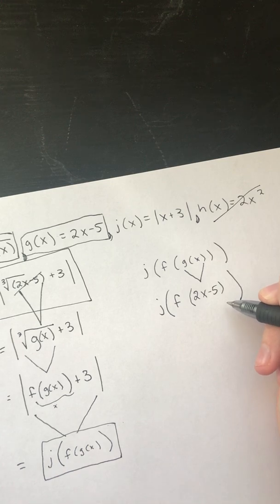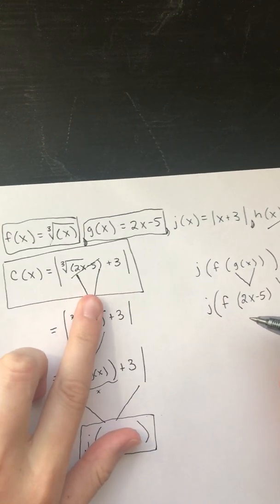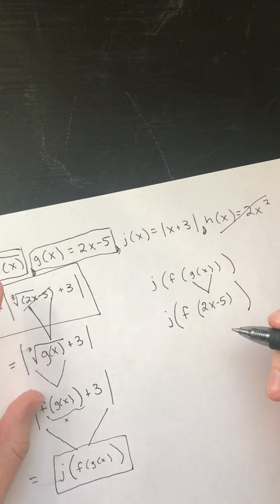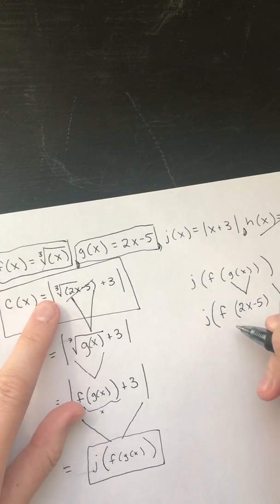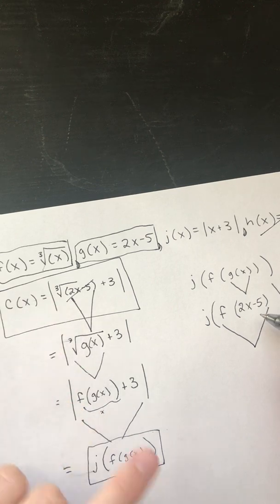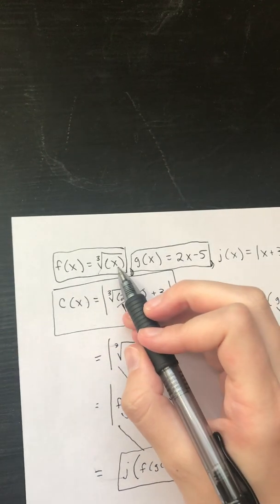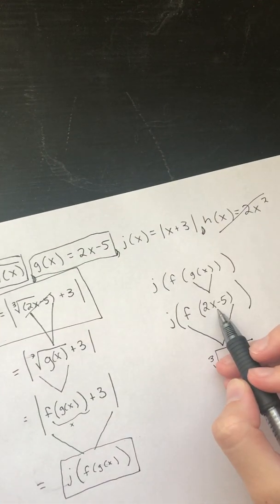f of 2x minus 5. So what is f of x? It is, oh it's that gross third root thing. Okay, so f of x or f of 2x minus 5 is third root of placing the x with the 2x minus 5.